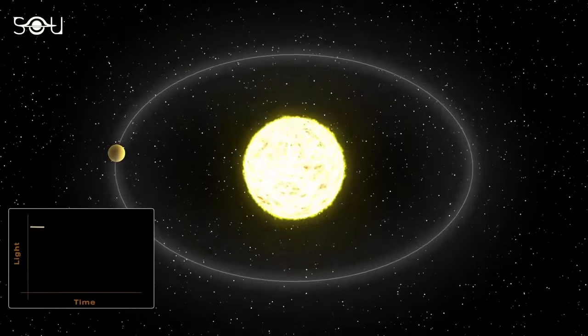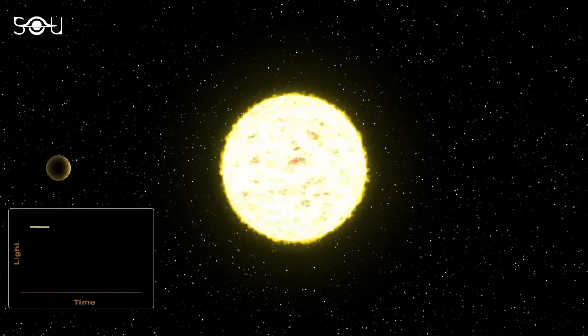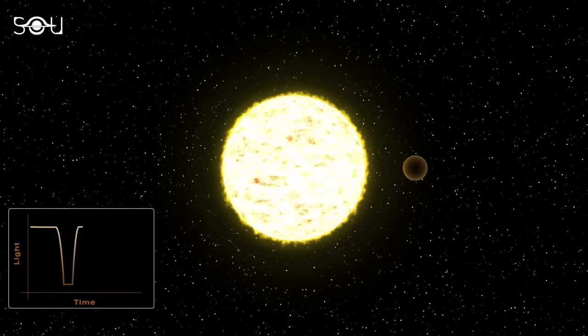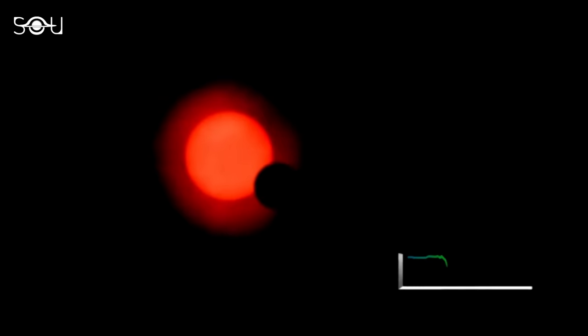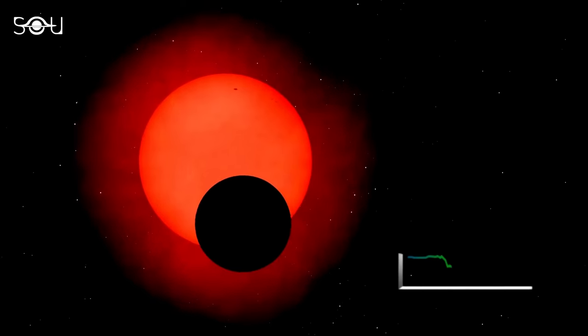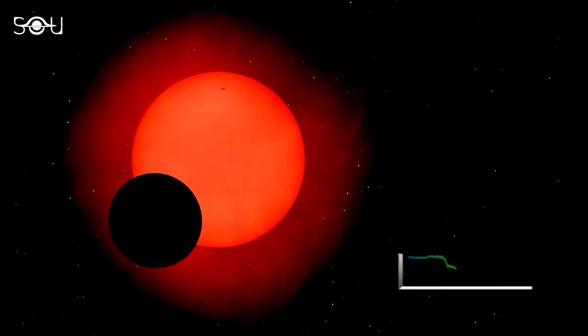TESS uses the transit method to look for exoplanets. When a planet passes in front of its host star, it causes a small dip in the star's brightness. By analyzing these fluctuations in the starlight, the presence of a planet can be inferred. The majority of the exoplanets found to date have been confirmed with the transit method.